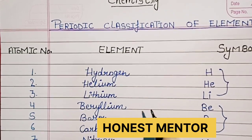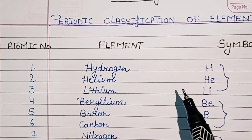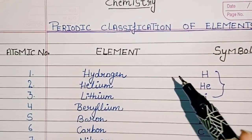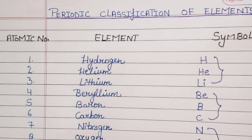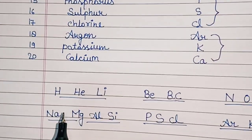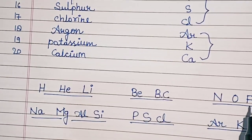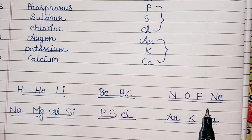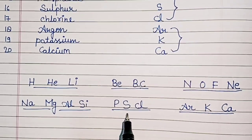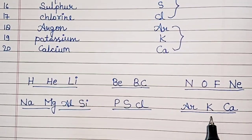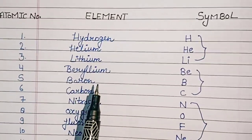Hello, my dear students. Today we are going to learn the names of the first 20 elements of the periodic table, that is the elements from atomic number 1 to 20. The mnemonic is: hi heli bbc no funny, na maang al si, fir se kli, aray kaka. We have divided the 20 elements into 6 slots.